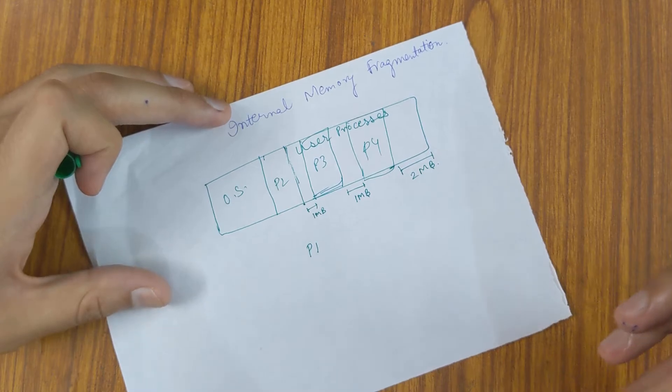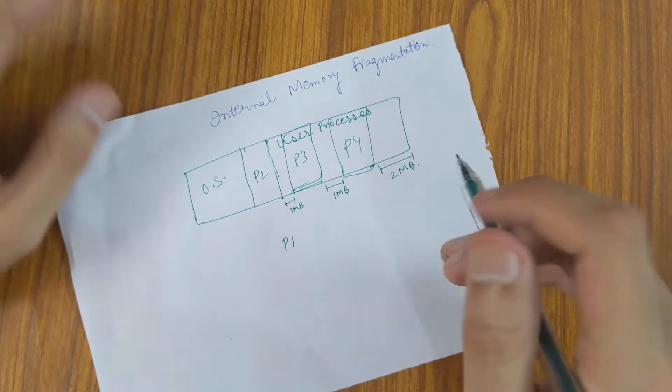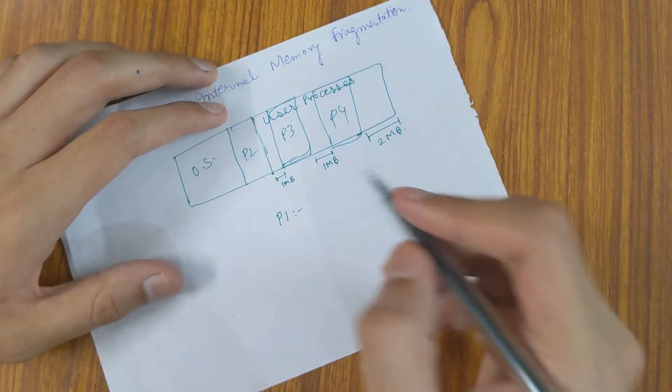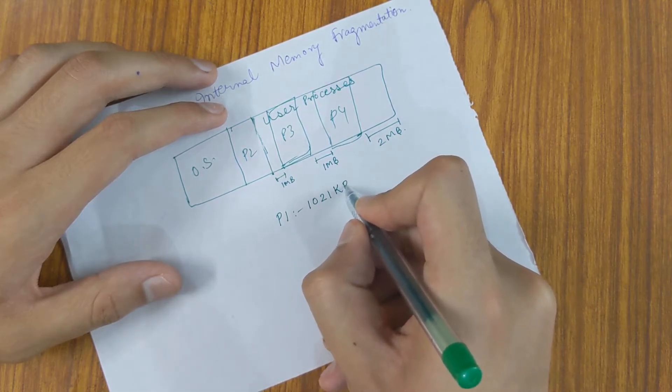Now a process comes with, P1 comes with a memory requirement of 1021 KB of memory.